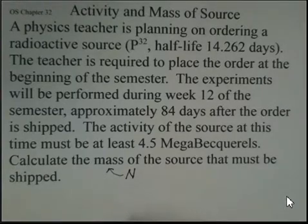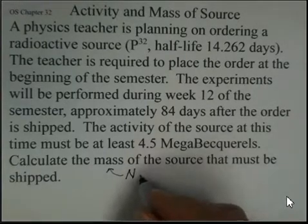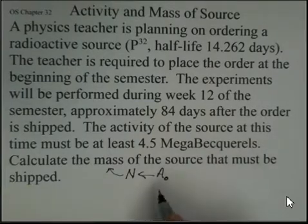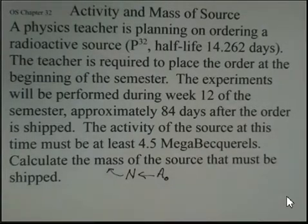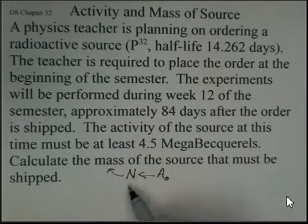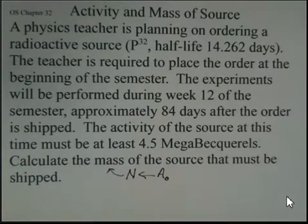In order to come up with that number, we'll need to know what is the activity at the time of shipment. I'll use A sub-naught for that, meaning time equals zero for our time interval that's going to be 84 days. So first I'm going to calculate the activity required when the source is shipped. Then we'll calculate the number of nuclei and we'll find the mass that's present in the source.